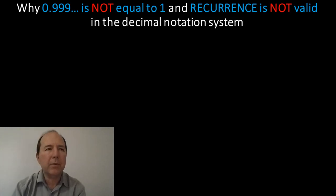This is a discussion about why 0.999 recurring is not equal to 1, and also why recurrence is generally not a valid notation in the decimal number system.